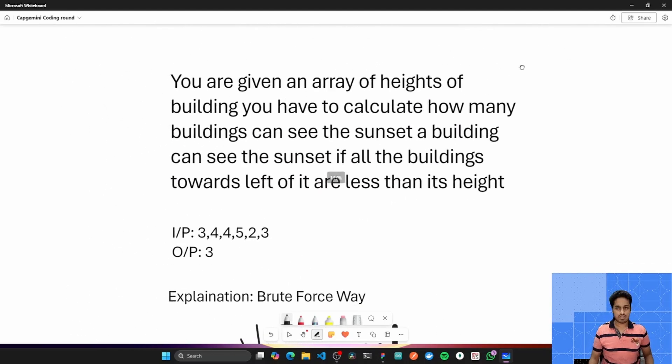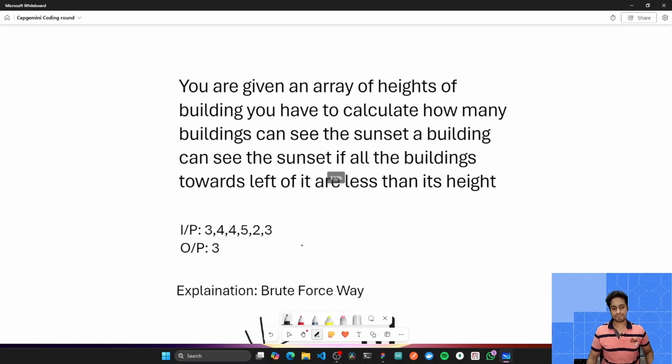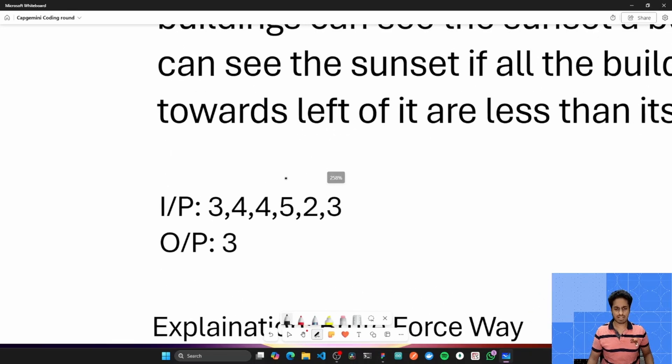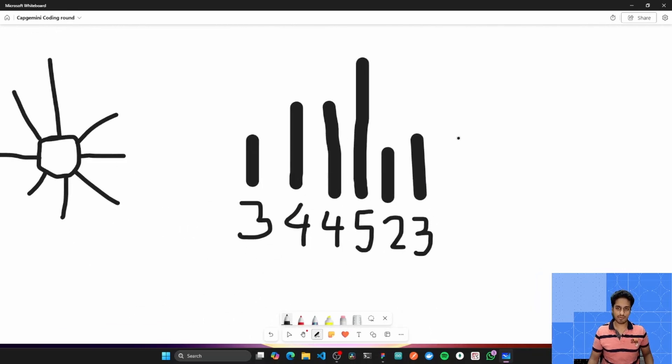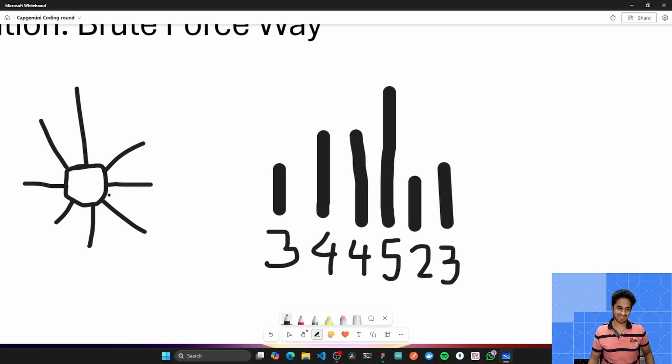The very first question, the easy level one for me was, you are given an array of heights of buildings. You have to calculate how many buildings can see the sunset. A building can see the sunset if all the buildings towards the left of it are less than its height. Now let's understand this question with help of an input. Let's consider this input array of 344523. Now over here, let's understand it with visualization 344523. This is a sunset, a very cute sunset.